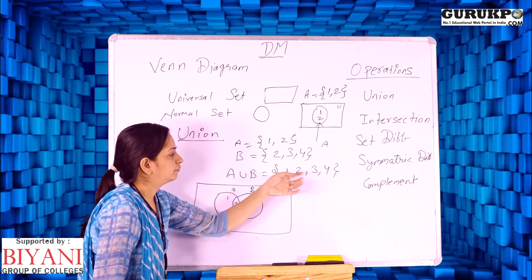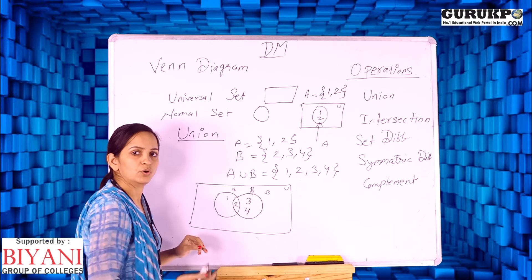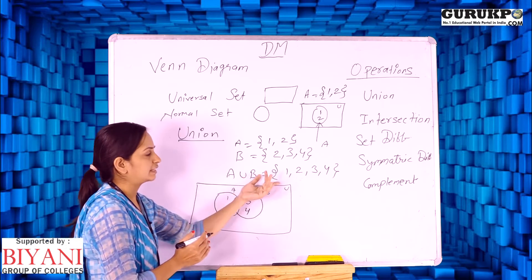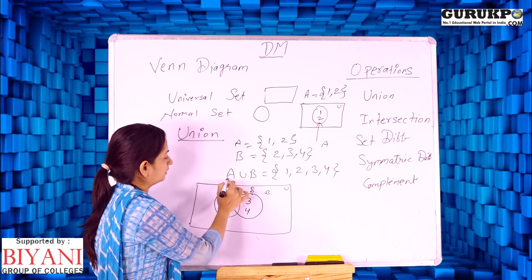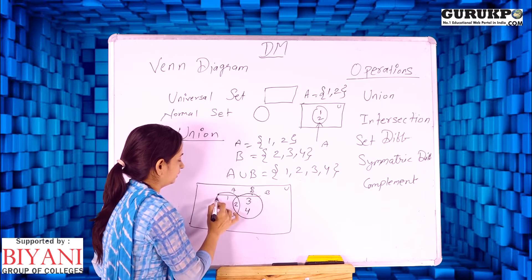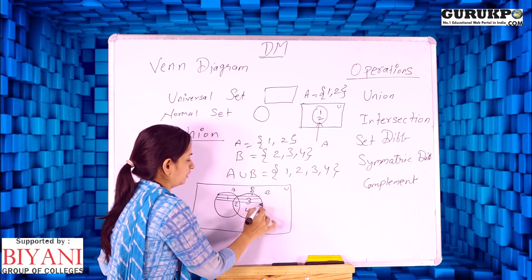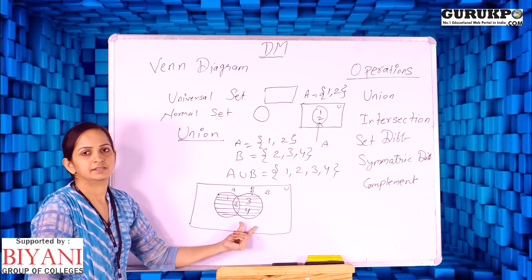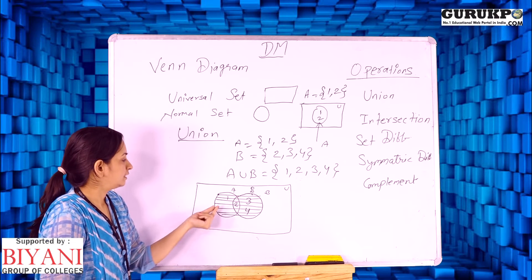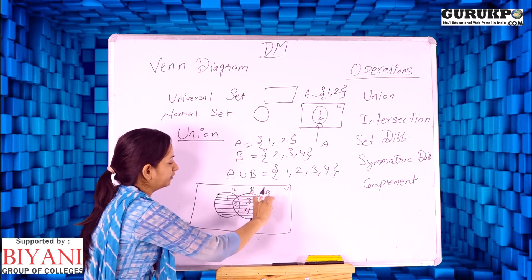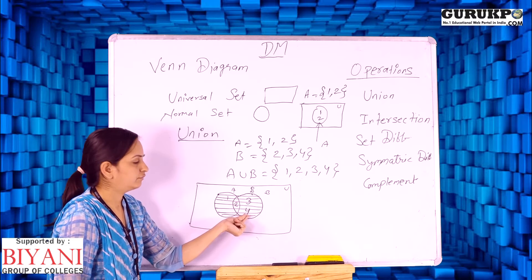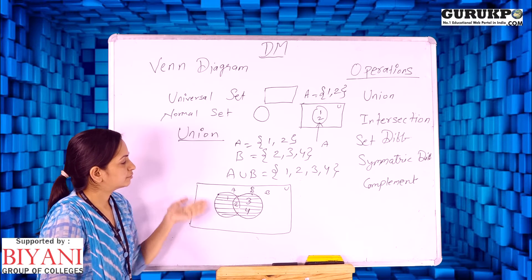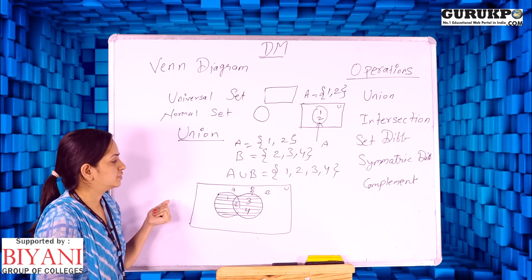We will now represent A union B. A union B includes all elements: 1, 2, 3, 4. To show the union, we highlight the entire covered area of both circles. This shaded area is called A union B. You can see all the covered area contains elements 1, 2, 3, 4 without repeating 2 — there is no repetition of 2. In this manner, we can represent the union operation in the Venn diagram.